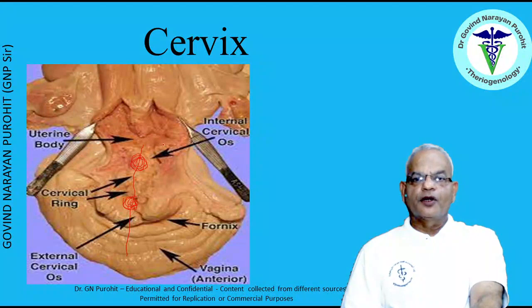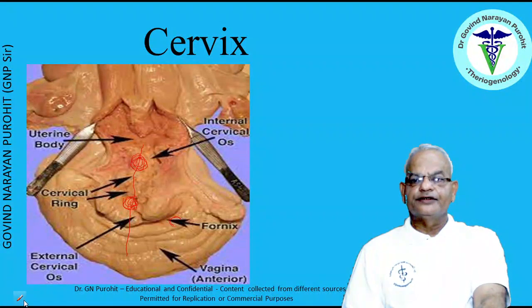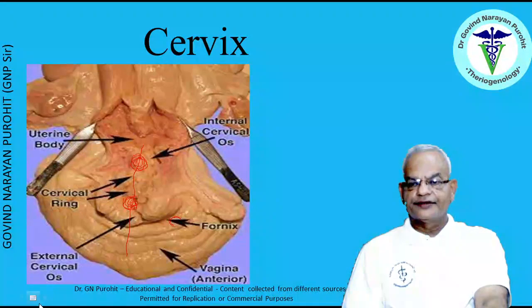This is the uterine body, and this is the fornix — the blind space where the cervix attaches to the vagina is known as the fornix.